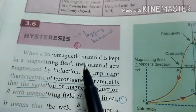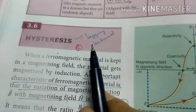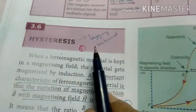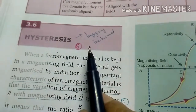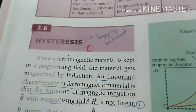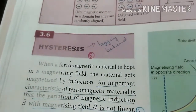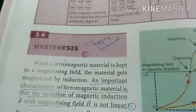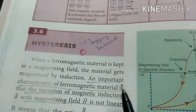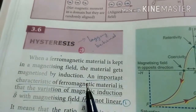So what is meant by hysteresis? Hysteresis means lagging behind. So what is lagging behind? The magnetic induction B is lagging behind the magnetizing field H.